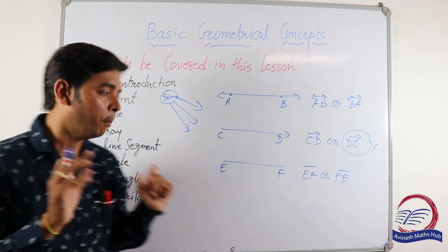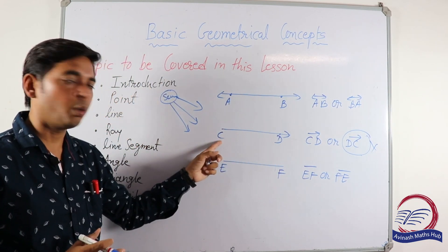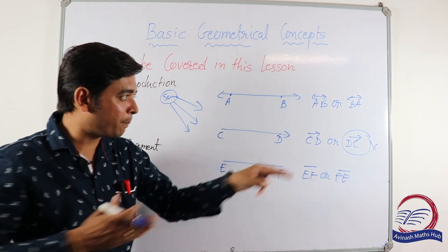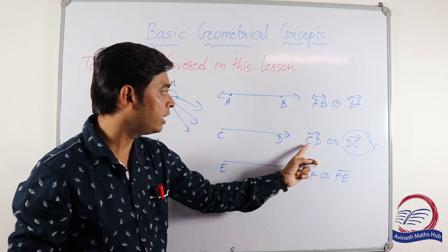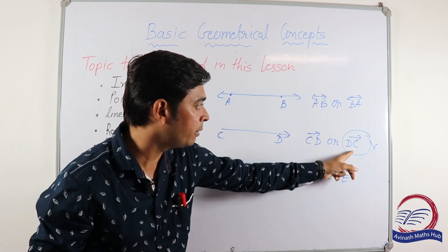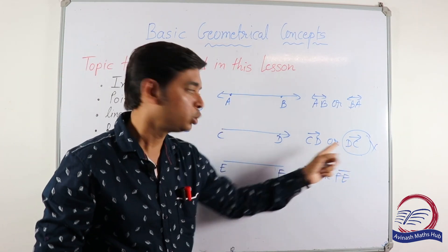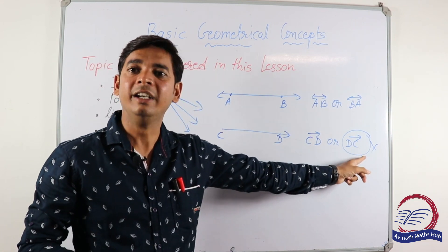Because ray CD means it originates from C and passes through D. If we write it this way, it means the ray originates from C and passes through D. If we write it the other way, it means it originates from D and passes through C. That is wrong. So we cannot write ray CD as DC.